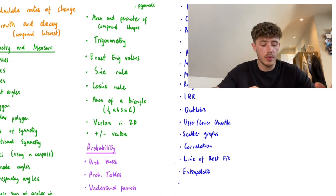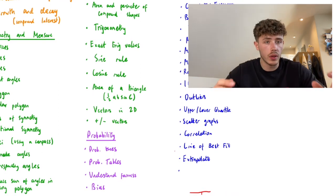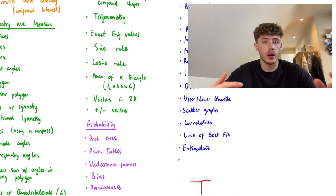Vectors in 2D, and what do they mean? And then adding or subtracting with vectors, or maybe multiplying by a certain constant.